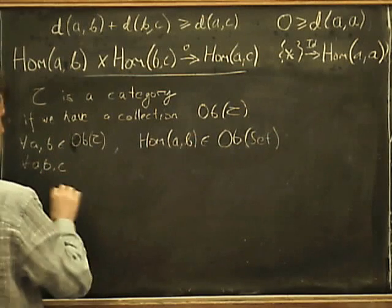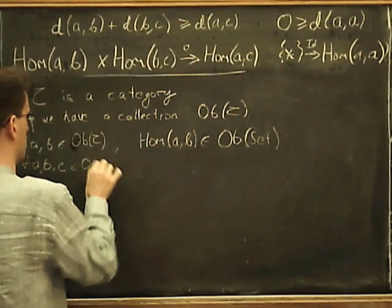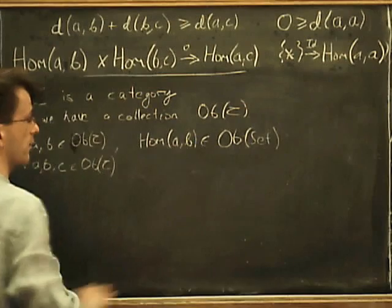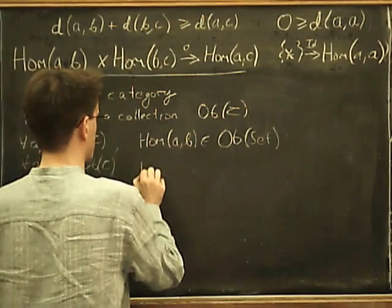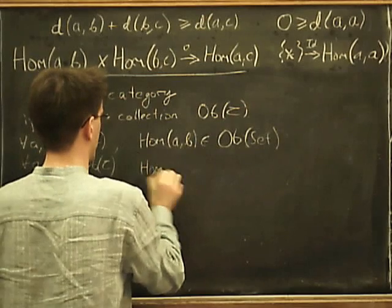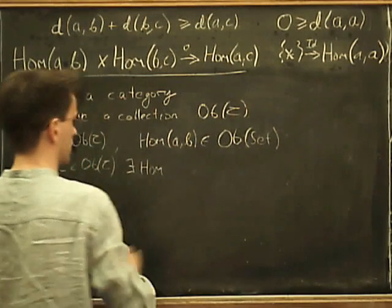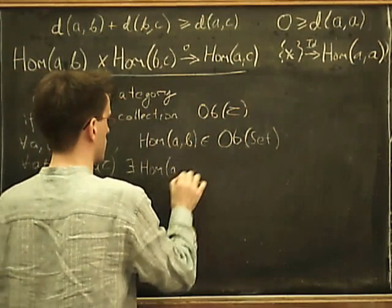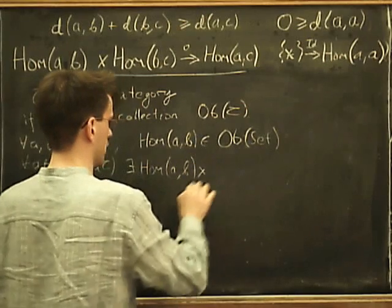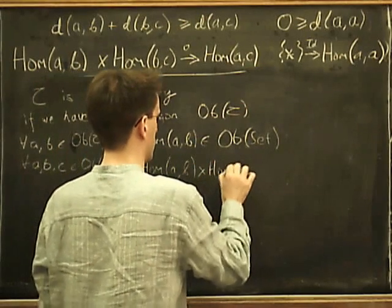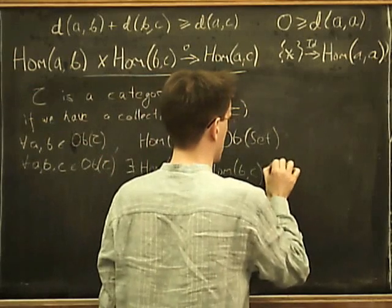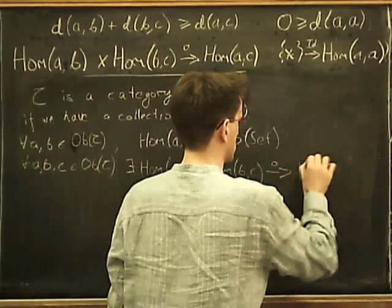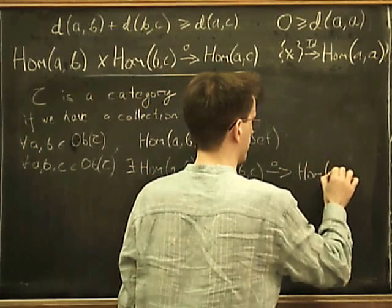And similarly, for all A, B and C in the objects of C, I have a morphism in the category of sets. So this is supposed to be composition. So for all A, B and C, we have that exists hom, a certain distinguished thing, hom(A,B) times hom(B,C). We can compose to get hom(A,C).